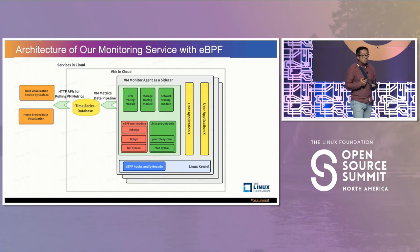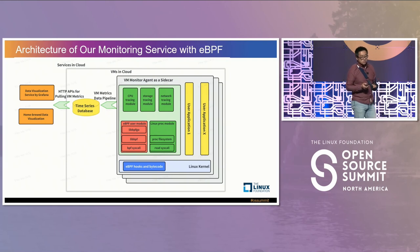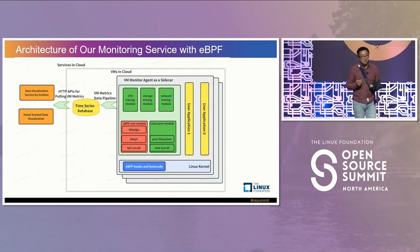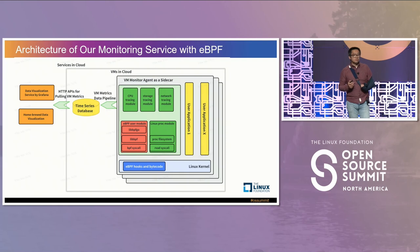However, when we investigated very challenging performance issues, we realized we needed performance data with finer granularities. So in the second iteration, as the right blue boxes show, we added eBPF code in the kernel to collect raw data and publish the results to user space through BPF system calls. Eventually our customers can see this additional data, and now we are able to work on more challenging performance issues than before.